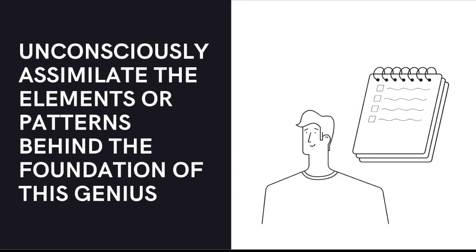And then you move towards the step of conscious competence, where you start learning the stuff and you start developing, you start modeling the genius or the patterns and the elements that they have. And this is where you start moving towards conscious competence. You can consciously model them and consciously replicate their way of thinking and their emotional states. And you keep doing that with consistency until you get to the point of unconscious competence, where you are unconsciously competent to assimilate the elements or patterns behind the foundation of this genius or their success.